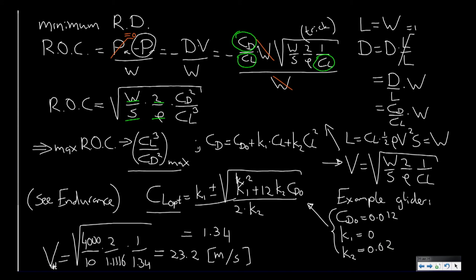So now we are almost at what we try to achieve. We try to find what the minimum rate of descent is. So we already know the optimum airspeed and we know the optimum CL. Let's now use these in order to find what is the minimum rate of descent.